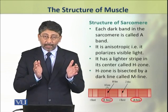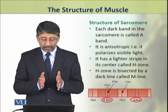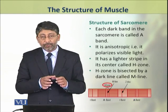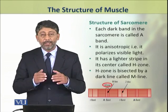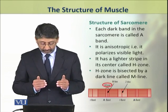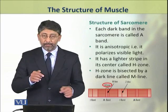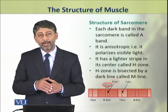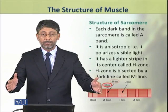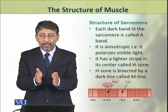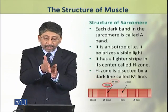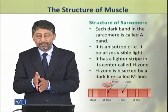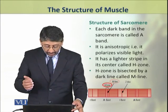یہ جو A band ہے یہ anisotropic ہوتا ہے، that is it can polarize visible light. اس dark band کے درمیان کا portion comparatively lighter color کا ہے — یہ lighter strip اسے H zone کہتے ہیں۔ This H zone itself has a darker line which is called the M line۔ اس طرح ایک dark band کے اندر تھوڑا سا portion light color کا ہے اور اس portion کے اندر ایک چھوٹی سی dark line ہے — یہ ہے structure of dark band۔